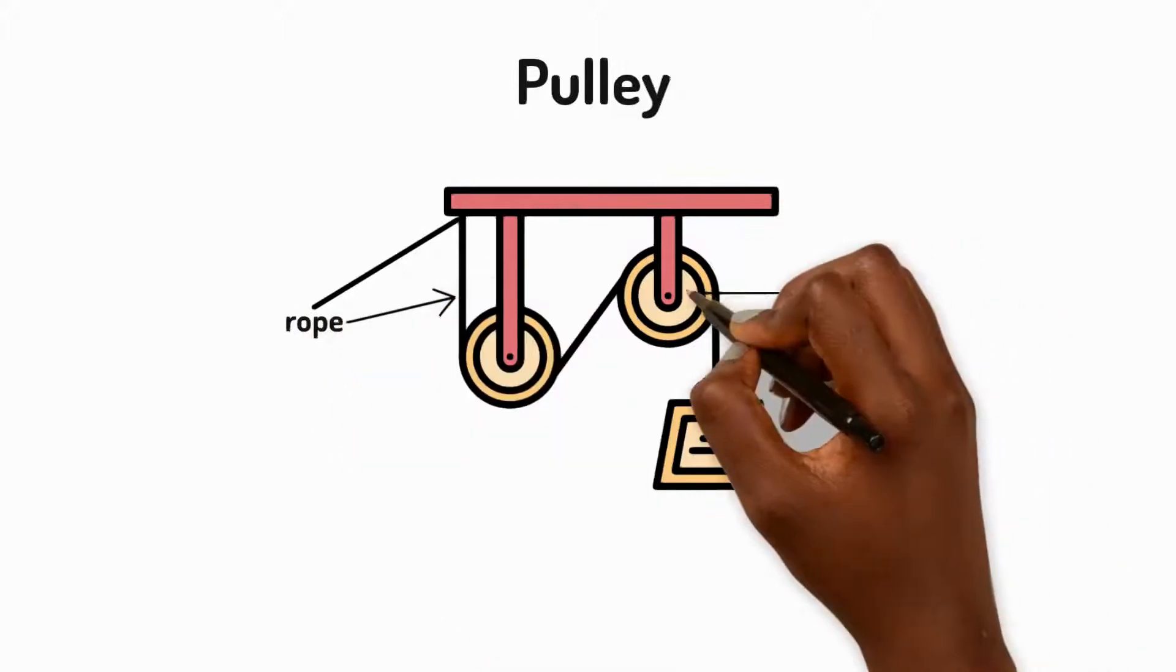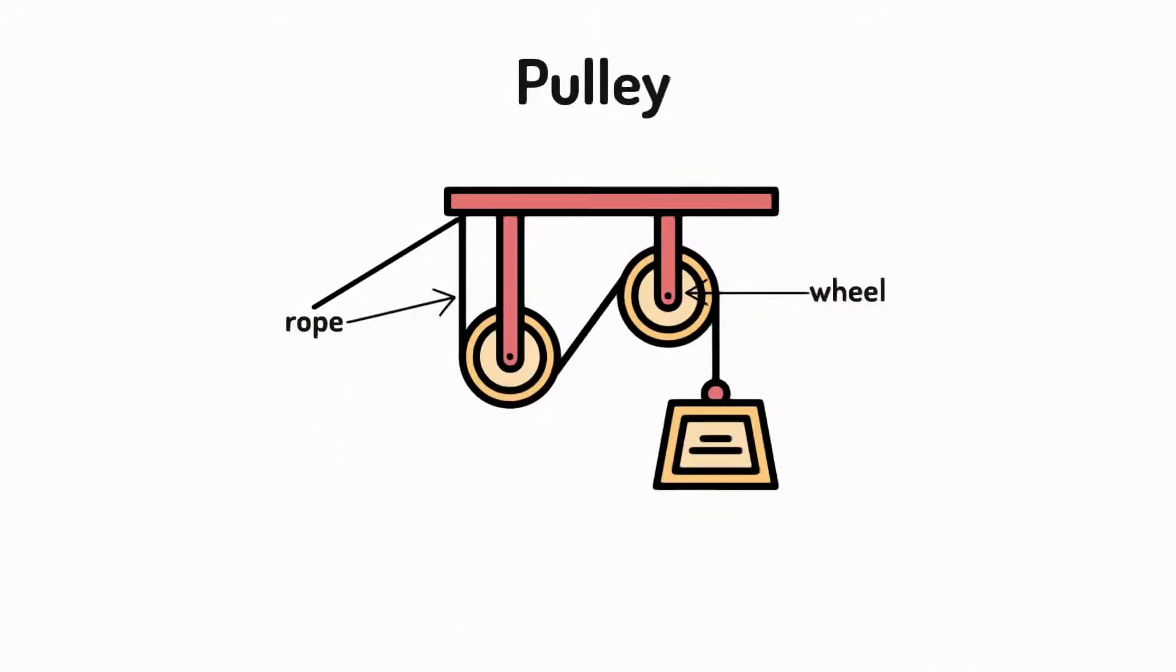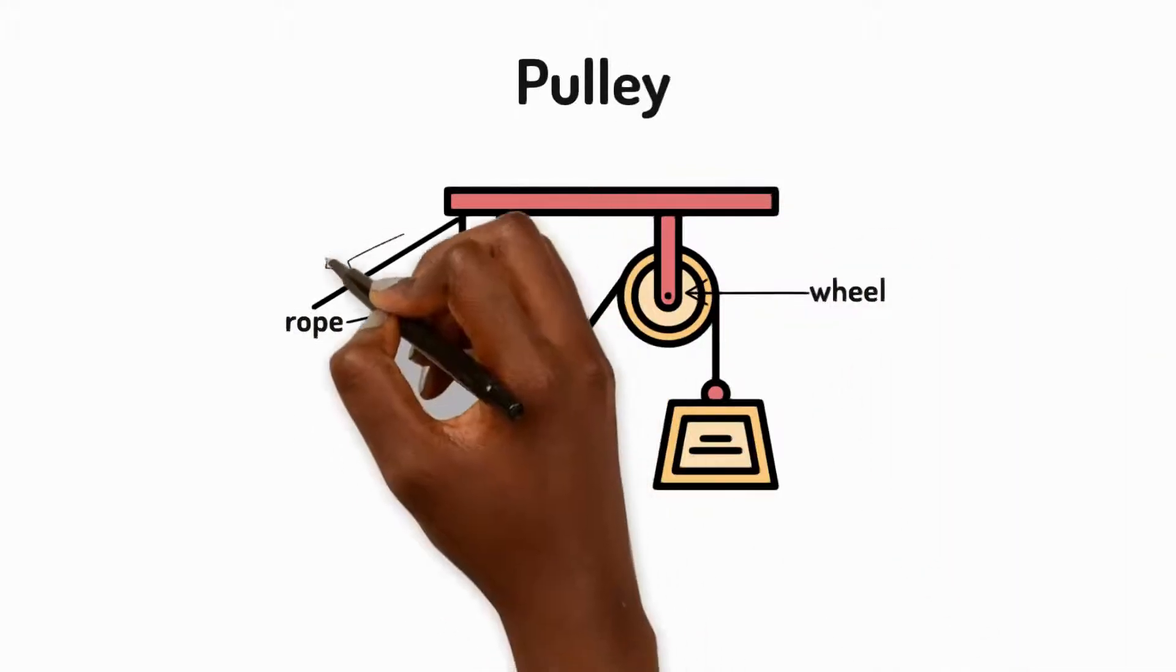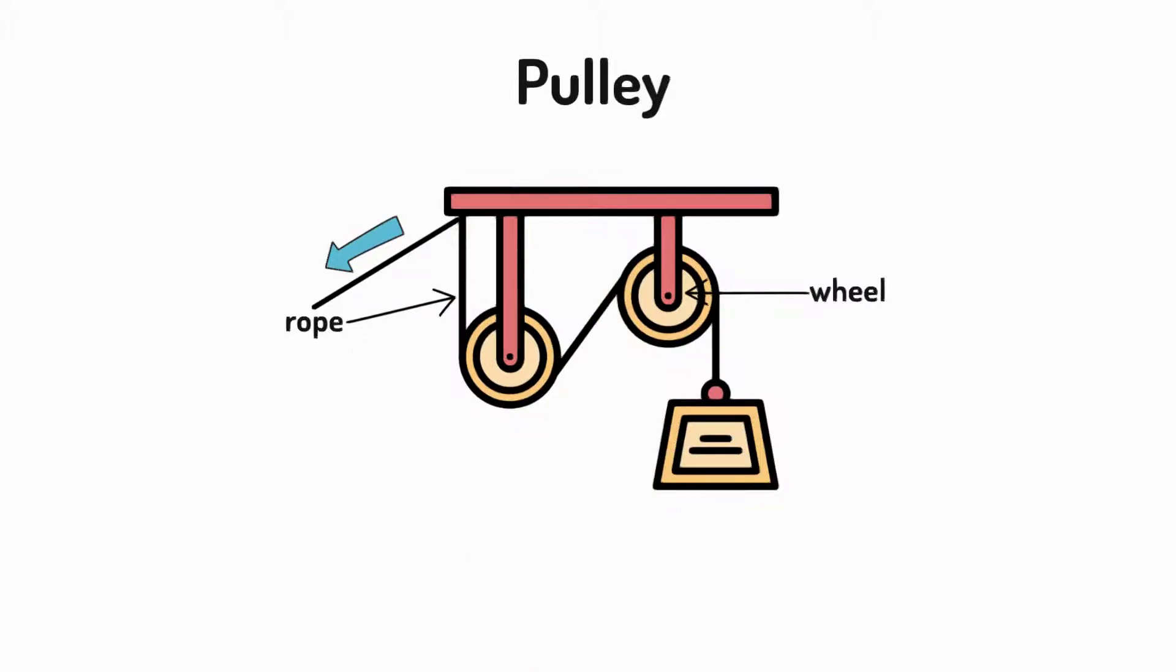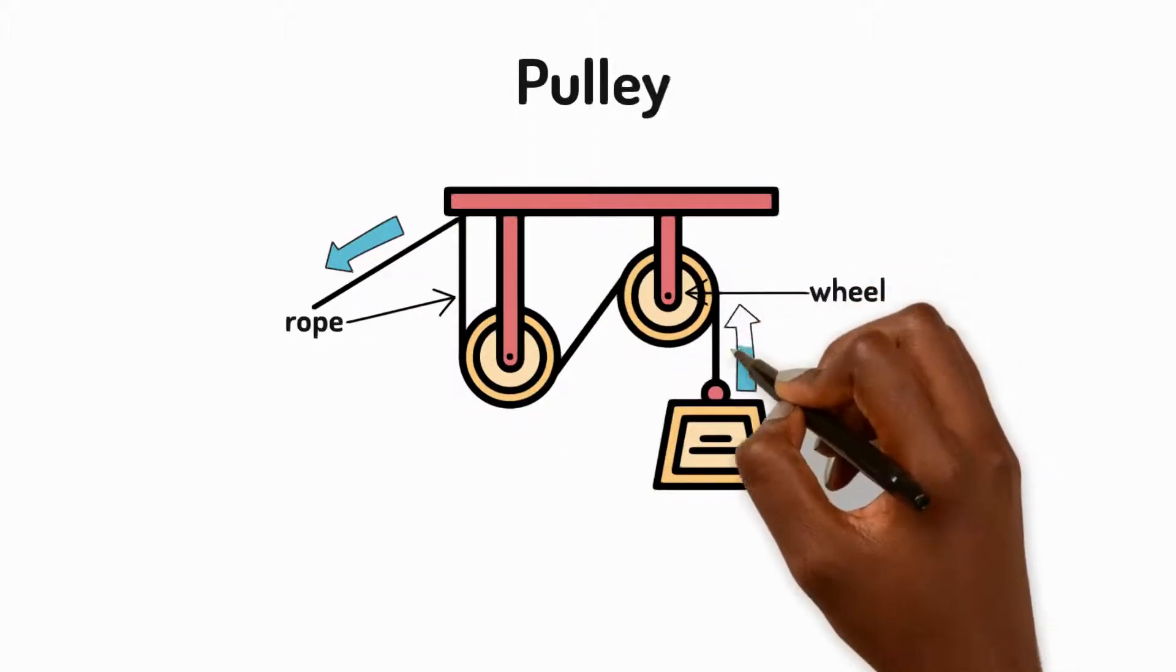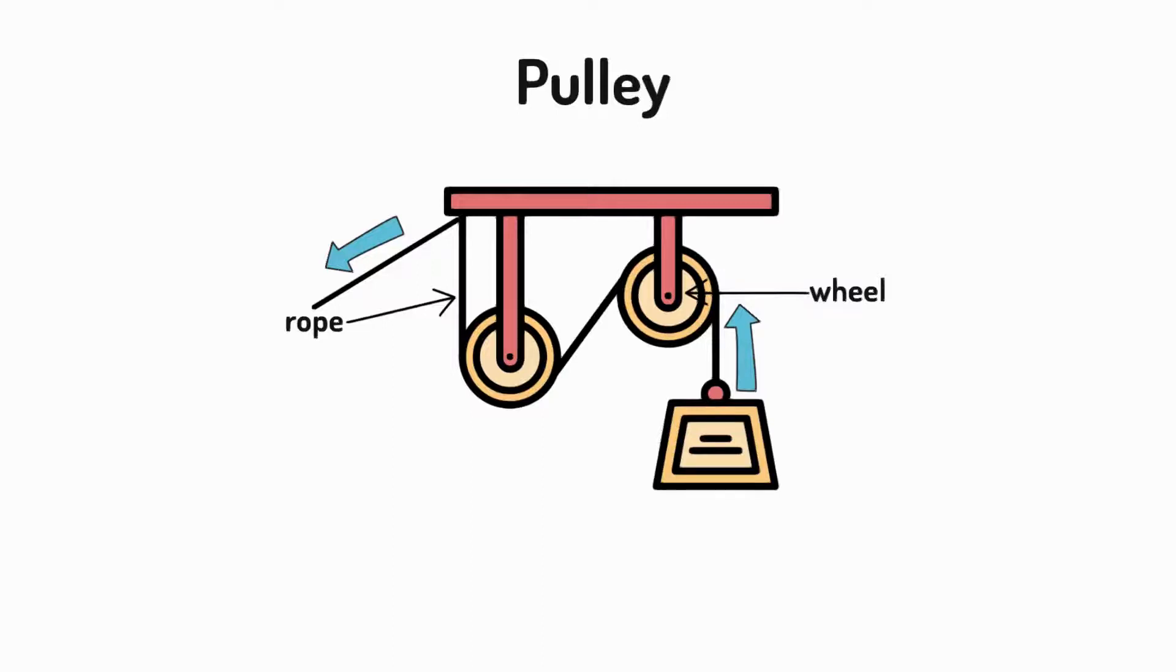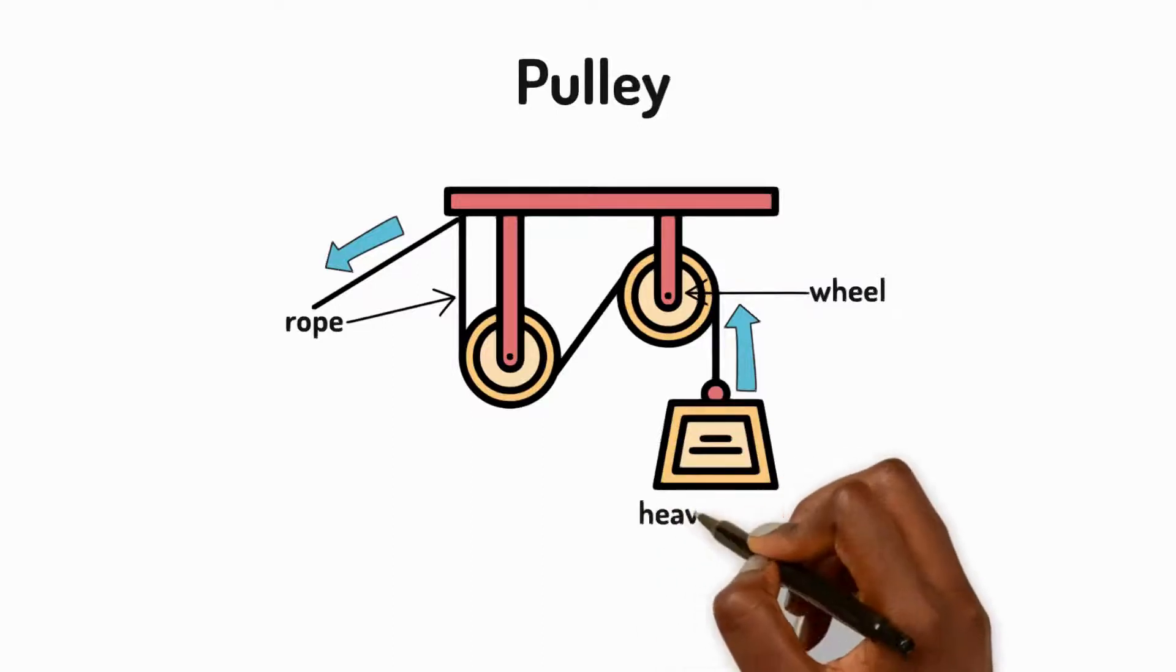Pulleys are created by looping a rope over one or more wheels. Here's how they work. When you pull down on one end of the rope, the pulley system creates an upward force at the other end. This is how it helps to lift heavy objects.